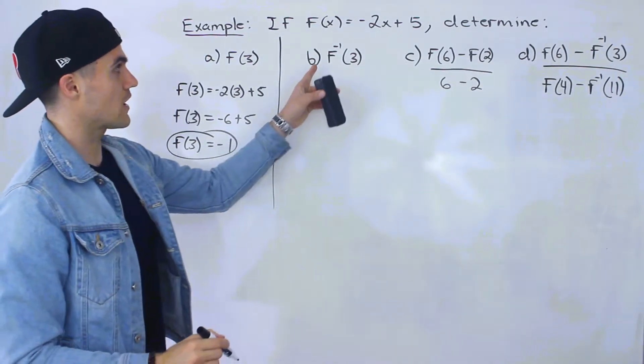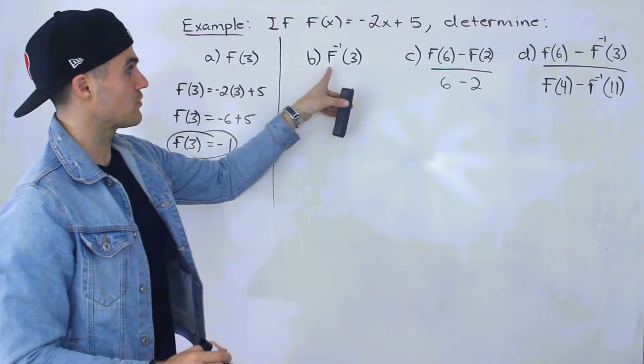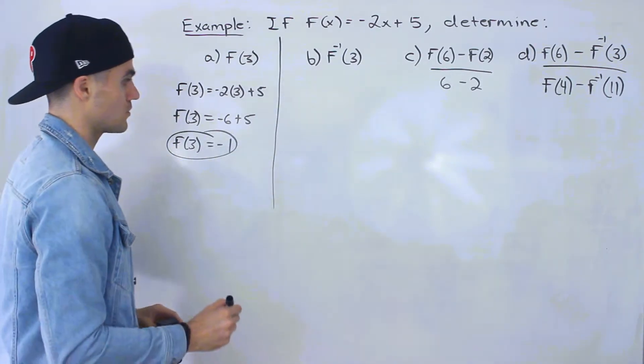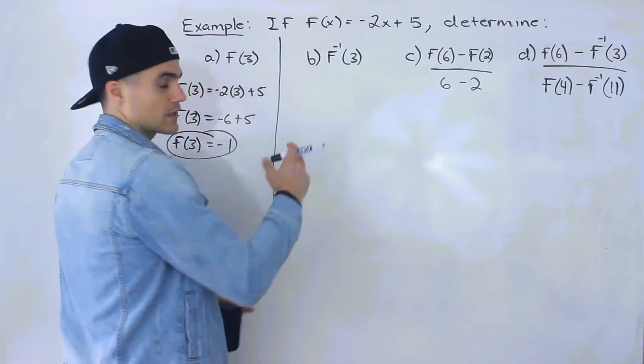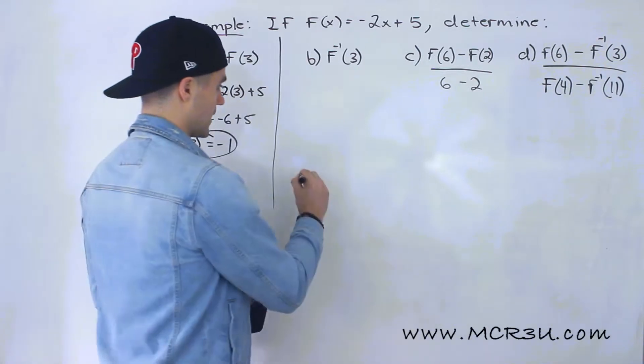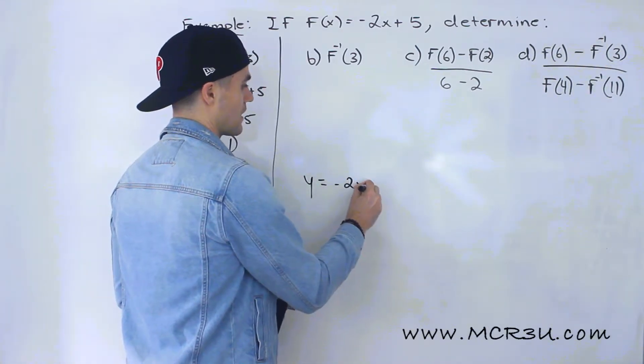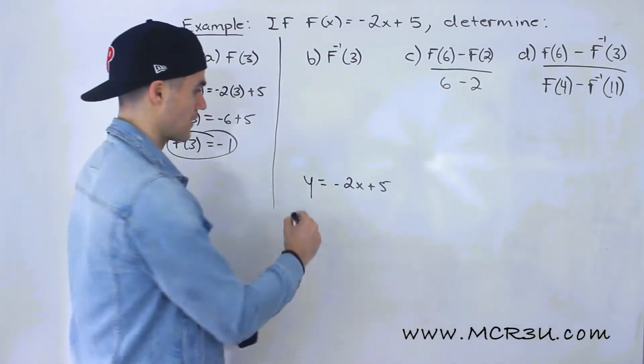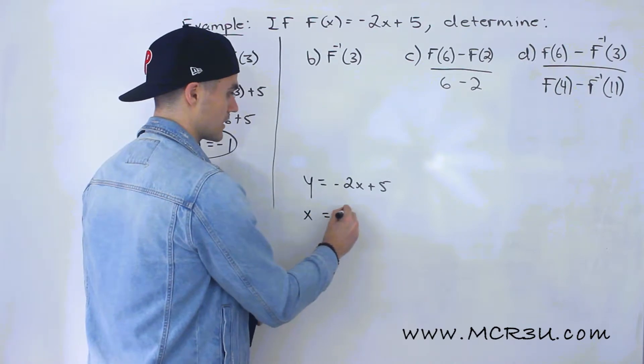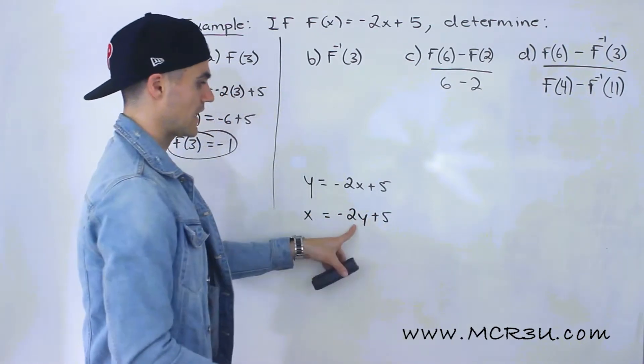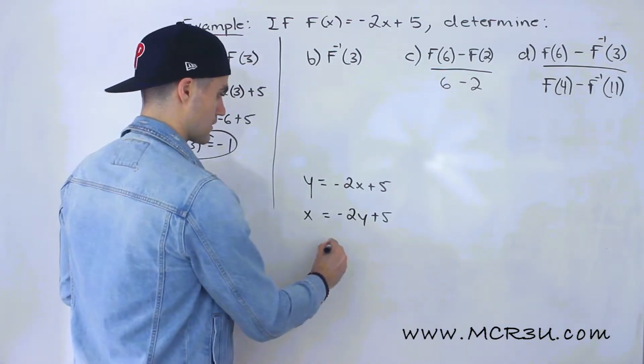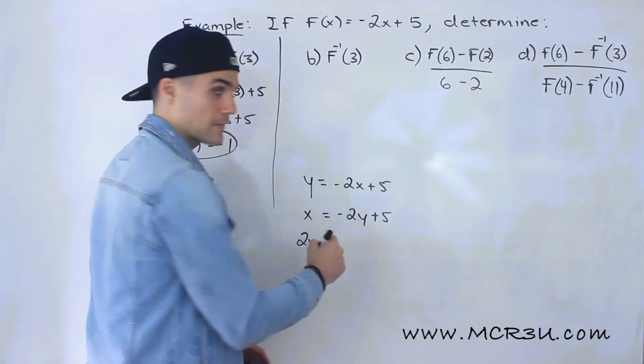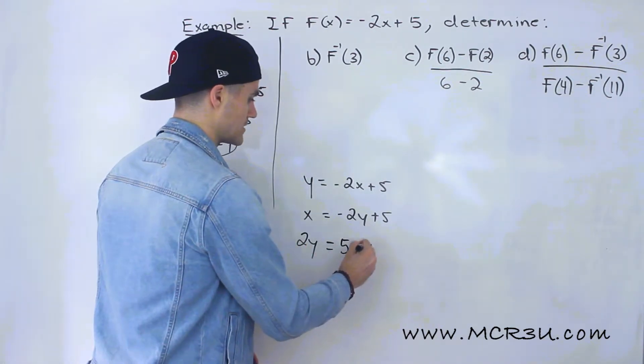Now part b, it's asking us for f inverse of 3. Now remember this is the inverse here. So there's actually two ways to do this. The first way is we can come up with an expression for the inverse. So we have y equals -2x + 5. And how do we come up with an expression for the inverse algebraically? We interchange the x and y values. So we'll have x equals -2y + 5. Then we isolate for that y value. I think the easiest way to do that, I'm going to bring the -2y over, make it positive 2y, and then I'm going to bring the x over and make it -x.